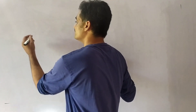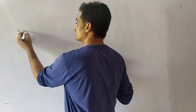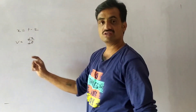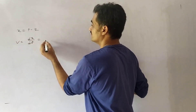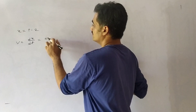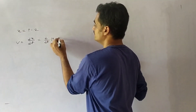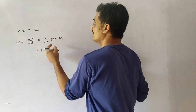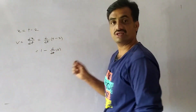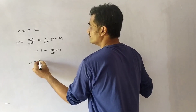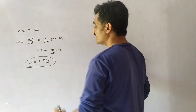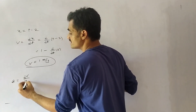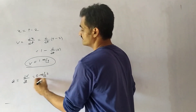For x = t − 2, velocity v = dx/dt = d/dt(t − 2) = 1 meter per second. The velocity is constant, so the acceleration of the body moving along the straight line is zero.